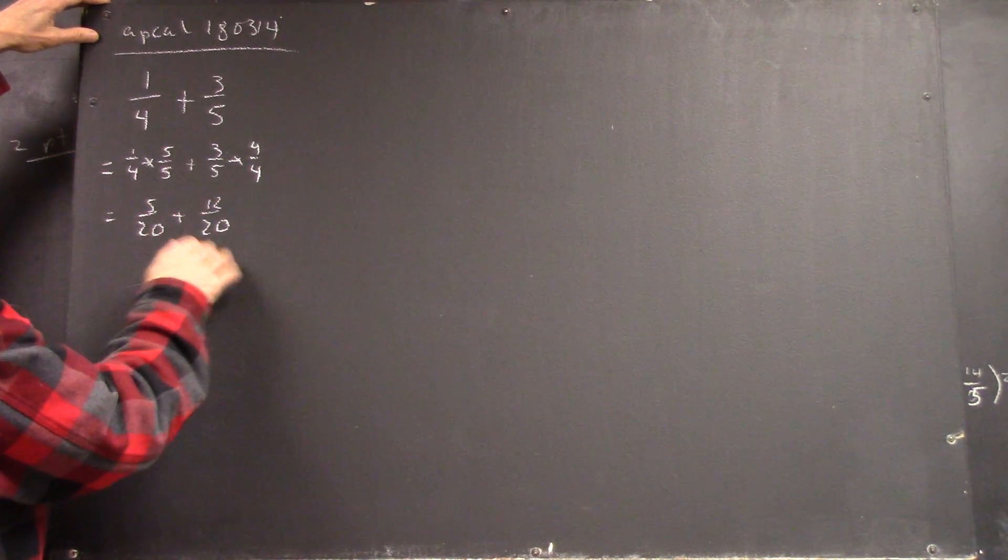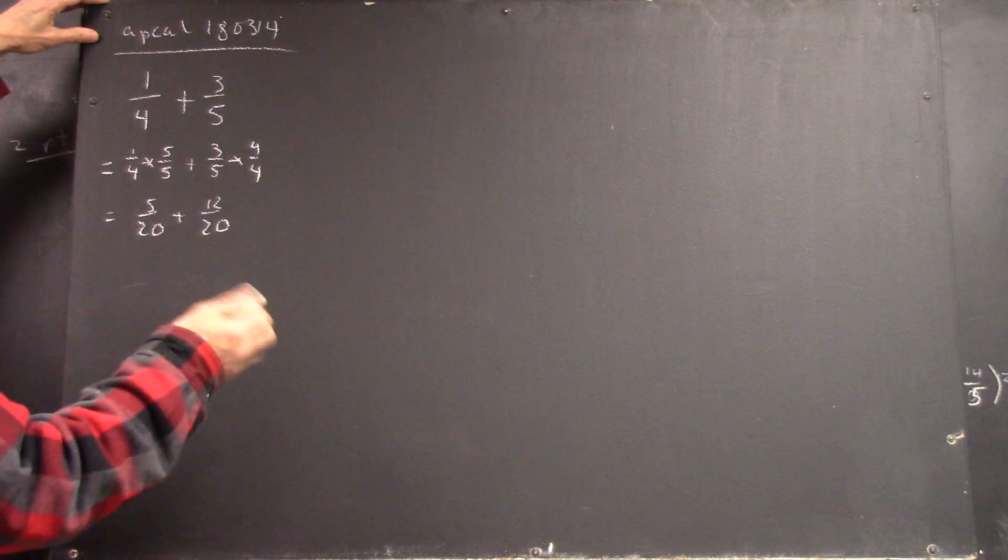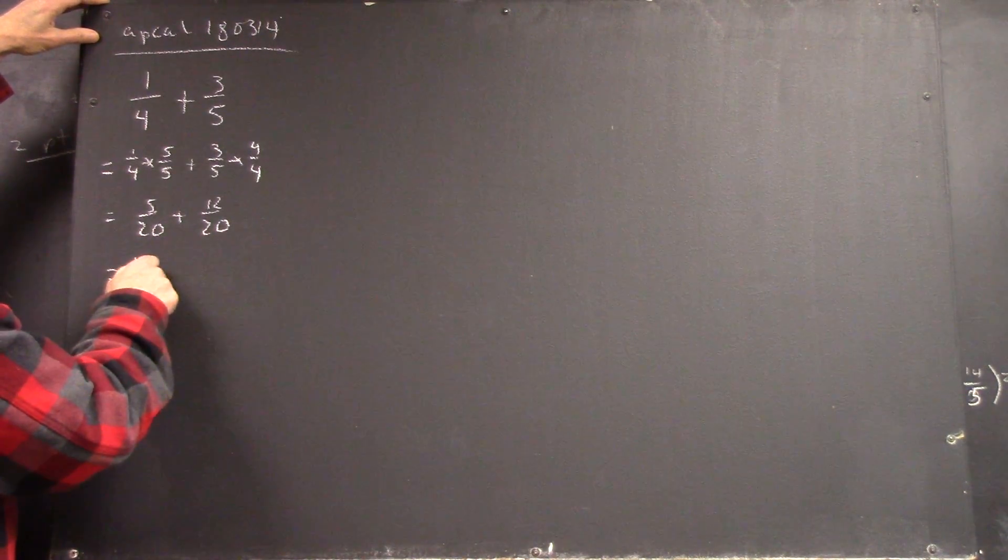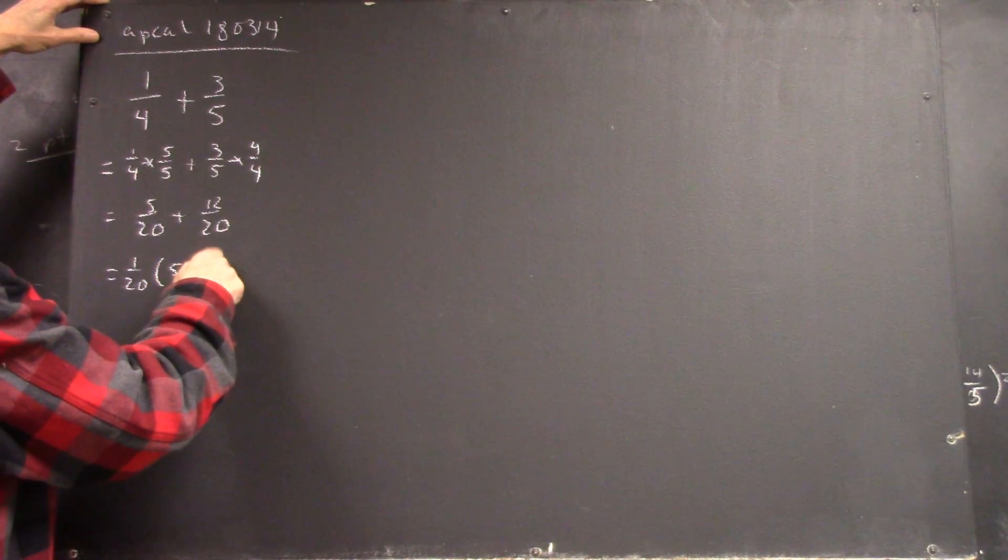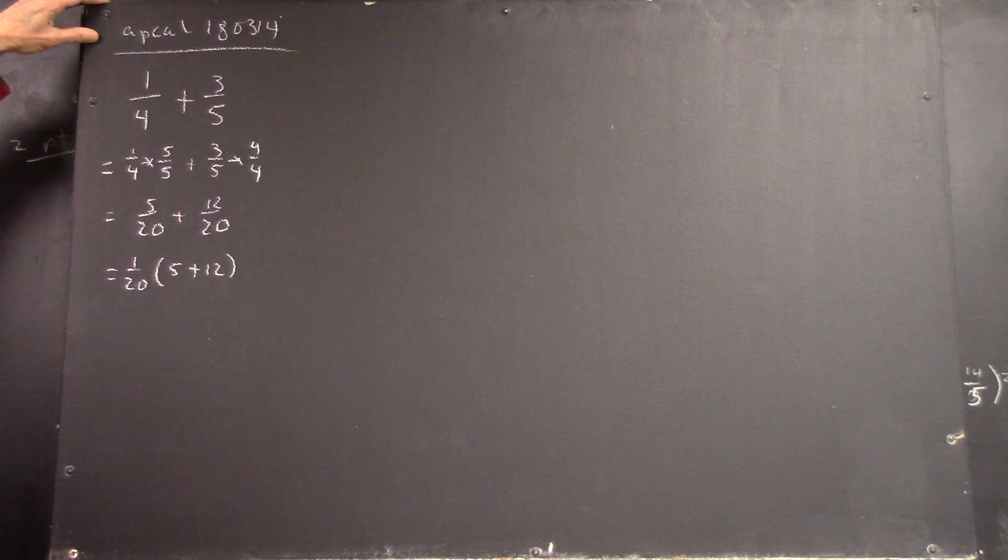And now we can add these because they have the same denominator. Now, a little more sophisticated, this is one-twentieth times five plus twelve, just using the distributive law, factoring.